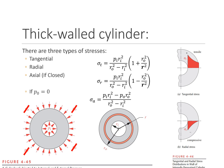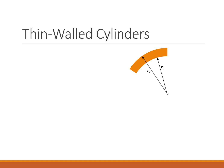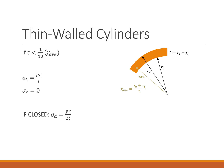Sometimes we can consider the walls to be thin. The thickness is defined as the outside radius minus the inside radius, and the average radius is the outside plus the inside divided by two. If the thickness is less than about one-tenth of the radius, we can consider the cylinder to be thin-walled. In that case, the equations simplify greatly: radial stress is zero, tangential stress is just PR over T, and if it's closed, the axial stress is PR over 2T.